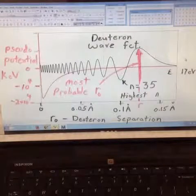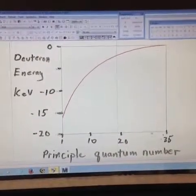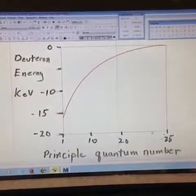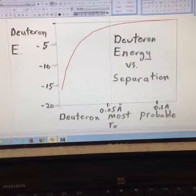Just for completeness, we show the deuteron energy versus the principal quantum number and, in the next slide, the energy versus the most probable deuteron separation.